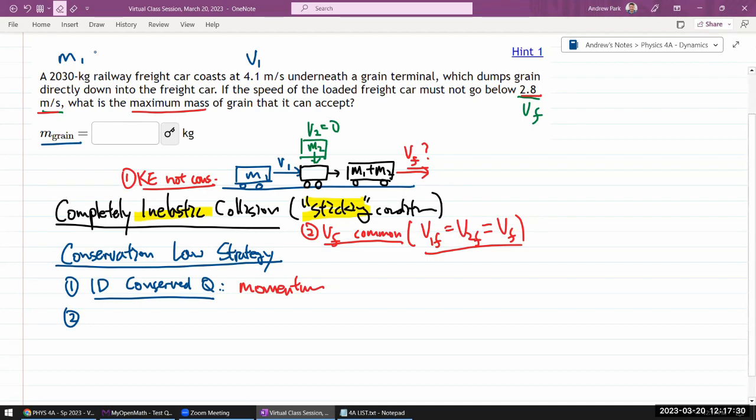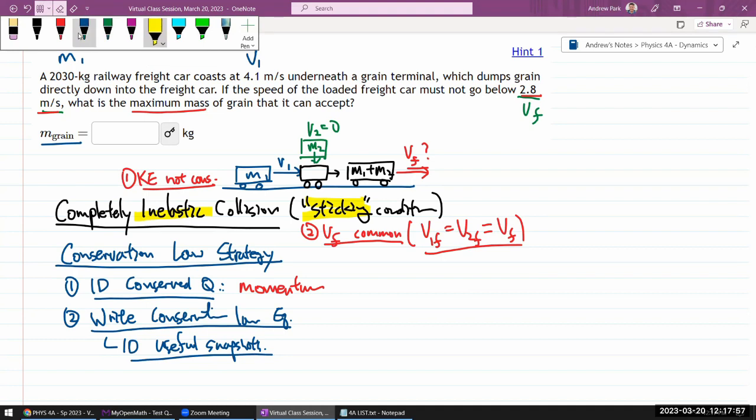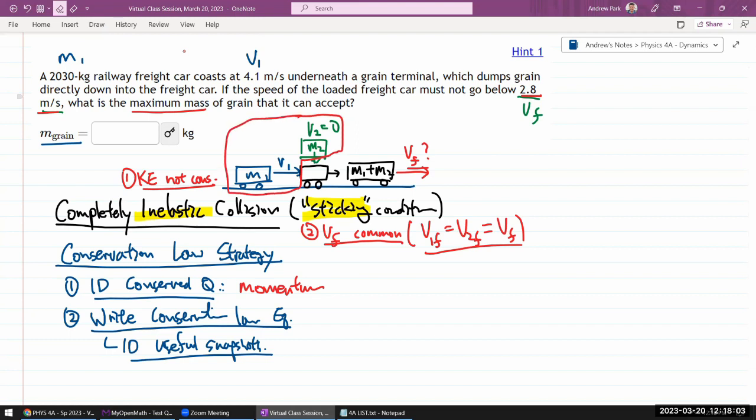Step number two, once you've identified the conserved quantity, then you write down conservation law equation. And as you are doing that, you really need to identify useful snapshots. In some questions, it's basically given for you. Here, in collision questions especially, here you have this pre-collision state, like here. This pre-collision state would be my snapshot A that's going to be useful for me. And then I have this post-collision state that's going to be my snapshot B that will be useful for me.